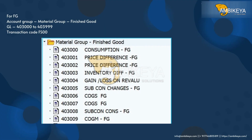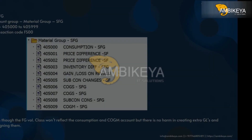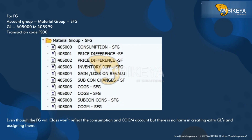For the FG account group, material group Finished Goods: GL range 403000 to 403999 — transaction code FS00. For the SFG account group, material group SFG: GL range 405000 to 405999 — transaction code FS00. Even though the FG valuation class will reflect the consumption and COGM account, there is no harm in creating extra GLs and assigning them.